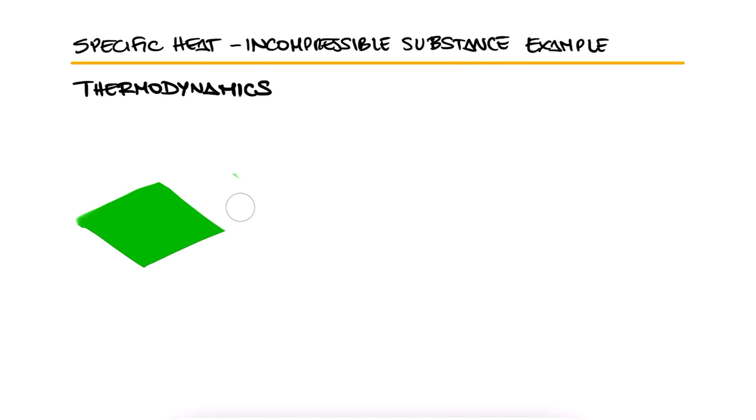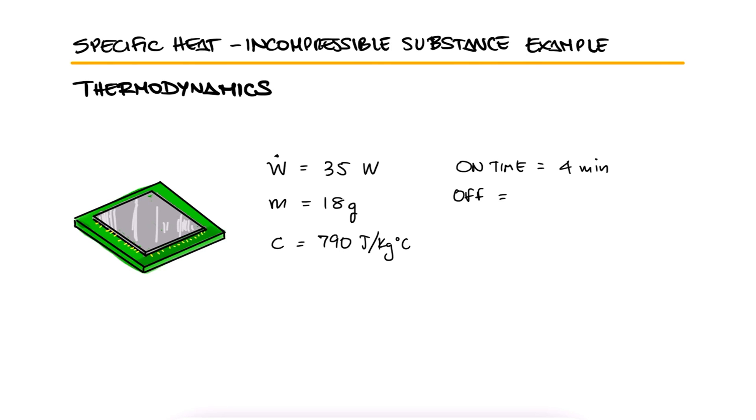An electronic device dissipating 35 watts has a mass of 18 grams and a specific heat of 790 joules per kilogram degree Celsius. The device is lightly used and it's on for 4 minutes and then off for several hours, during which it cools to the ambient temperature of 20 degrees Celsius.